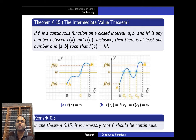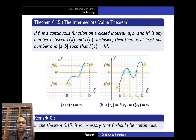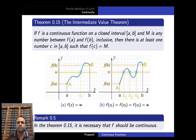Now we will discuss the Intermediate Value Theorem — a really nice theorem we need to remember, as we use it frequently. Intermediate means 'between.' If f is a continuous function on a closed interval [a, b] and M is any number between f(a) and f(b) inclusive, then there is at least one c in the closed interval [a, b] such that f(c) = M.